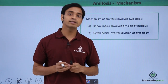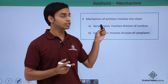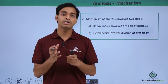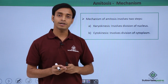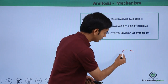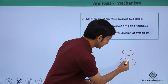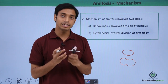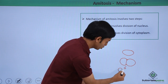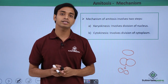Amitosis involves mostly two different phases or steps. The first is known as karyokinesis, which involves the division of the nucleus. Since the nuclear membrane does not dissolve, the nucleus grows in size and develops a constriction in between. This constriction slowly deepens and the nucleus starts dividing, eventually splitting into two different nuclei.